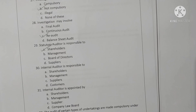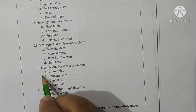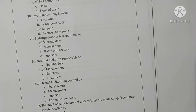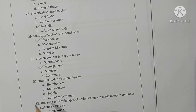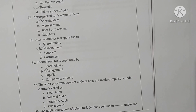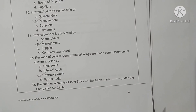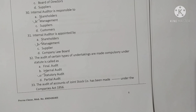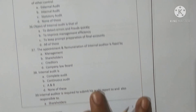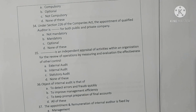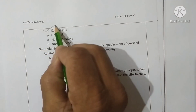Question 30: Internal auditor is responsible to the management — option B is correct. Internal auditor is appointed by the management — option B is correct. The audit of certain types of undertakings made compulsory under statute is called a statutory audit — option C is correct. Question 33: The audit of accounts of a joint stock company has been made compulsory under the Companies Act 1956 — option A is correct.